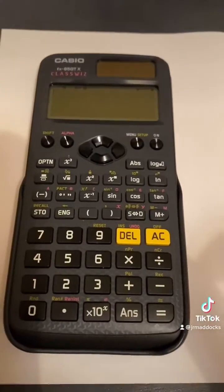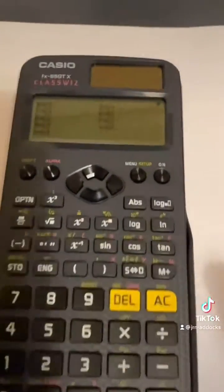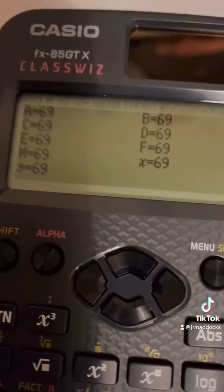Now here's the new bit that I learned today. You can press shift, recall, and you can see all the numbers stored against each of those.